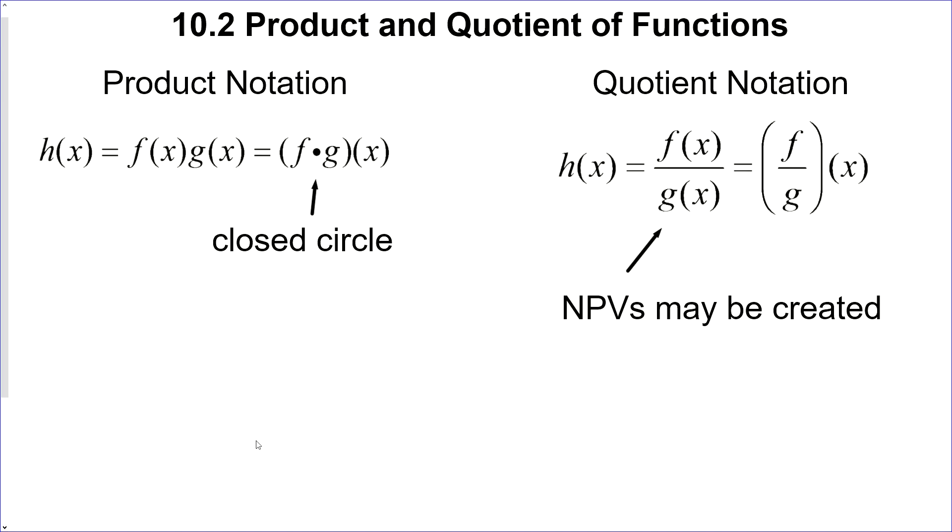This is 10.2 product and quotient of functions. Product means to multiply, so we could just have a new function here and it's the product or the multiplication of two functions. We can also write it like this: f multiplied by g, and it's a closed circle as we use sometimes for multiplication. Quotient means divide here, and we could take two functions and divide one from the other and create a new function. We could also write it like this: f divided by g of x. Now for this one we may create non-permissible values because we're putting something in the denominator, so we'll have to watch out for that.